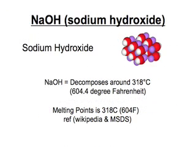Now let's look at sodium hydroxide. The sodium hydroxide decomposes at around 318 degrees Celsius, or 604 degrees Fahrenheit, and the melting point is also around 604 degrees Fahrenheit. You can see both of those references in Wikipedia and the material safety data sheets.